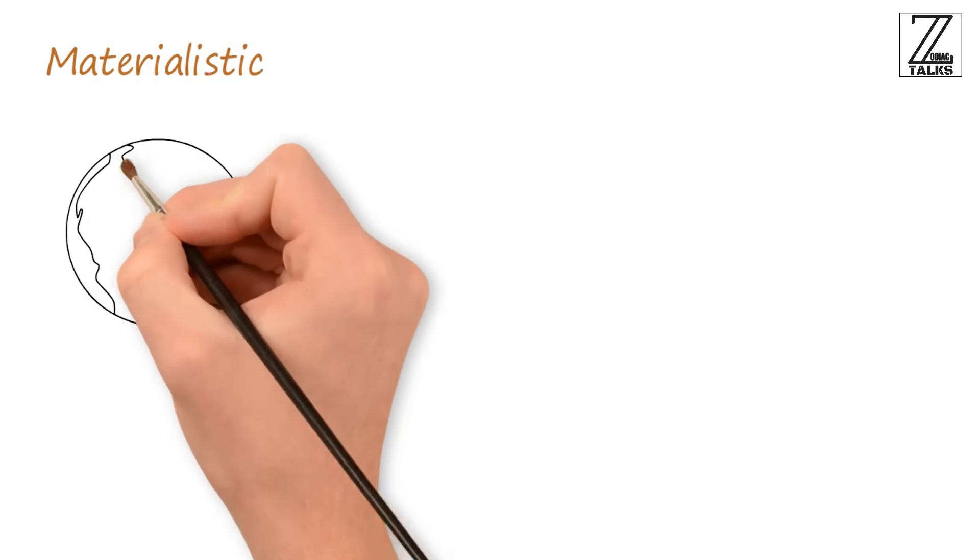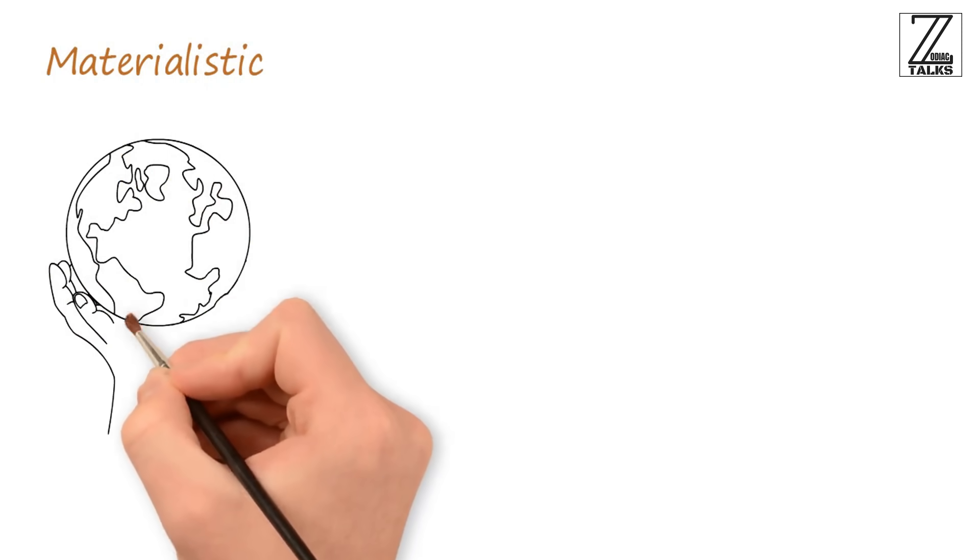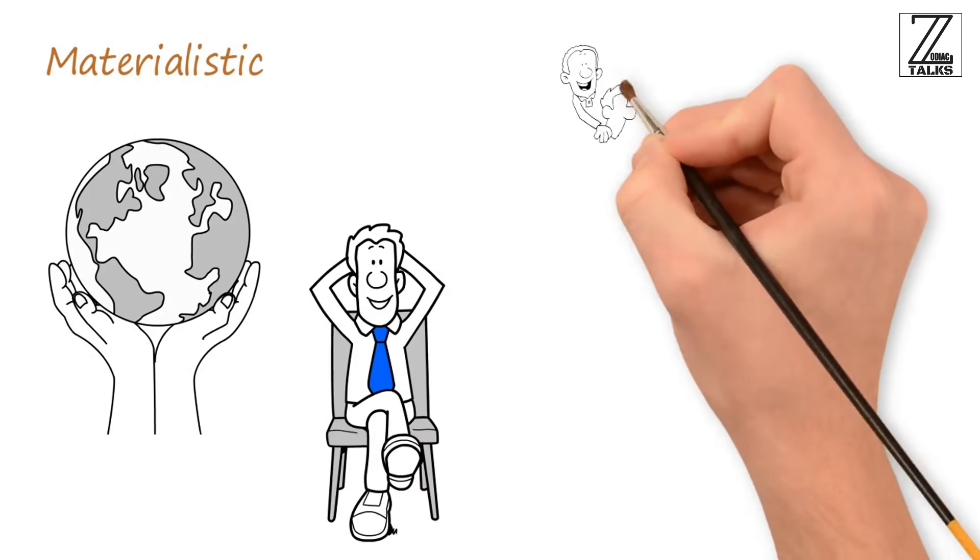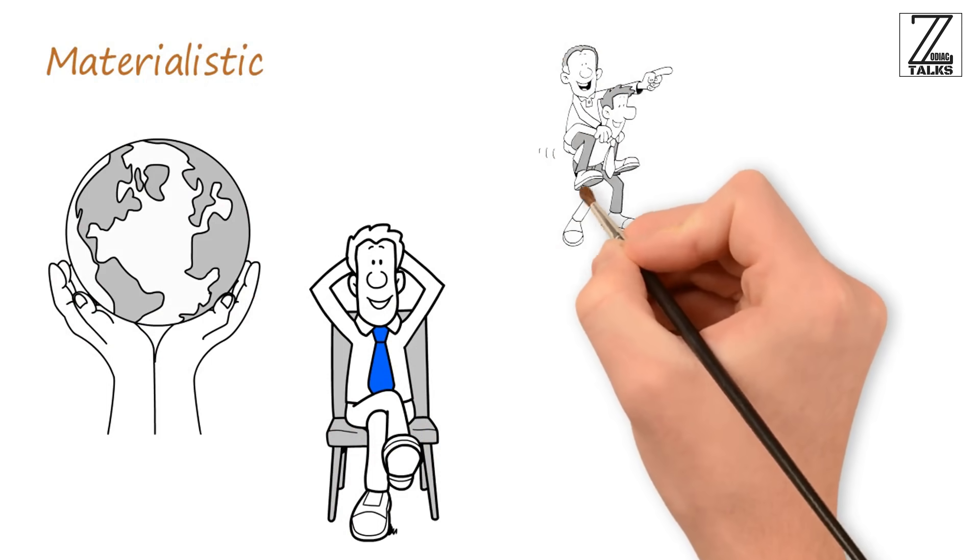Materialistic. This earth sign is deeply rooted in all worldly matters. Capricorns are rather smart individuals. They have the ability to easily understand how the world works around them.